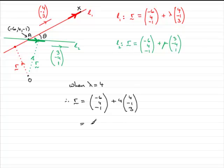4 minus 4 that gives you 0, and then minus 1 plus 12 that gives you 11.